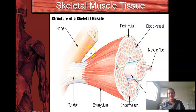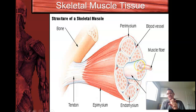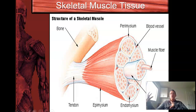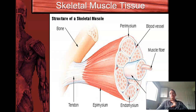Skeletal muscle attaches to bone by a tendon. You have individual muscle fibers, and many muscle fibers together in a bunch is called a fascicle. When you put all those fascicles together you get the endomysium. Muscle builds upon each other — you don't actually get new cells. The muscle you have grows the more you use it, and as you don't use it, it gets smaller and shrinks.